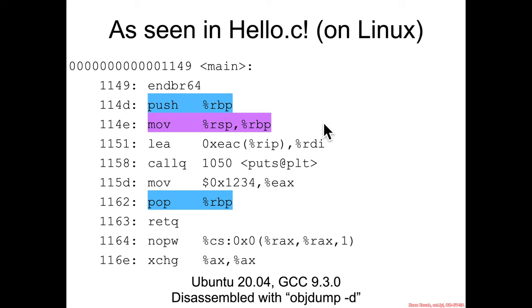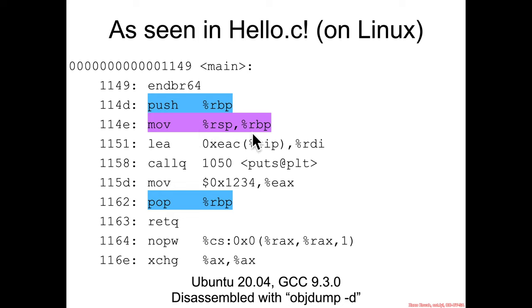These are the same assembly listings we saw before, but now that we've seen the 32-bit calling conventions we might have a sense of why. It's a push/pop thing with a move rsp to rbp — that's Intel syntax versus AT&T syntax, which reverses the operand order.